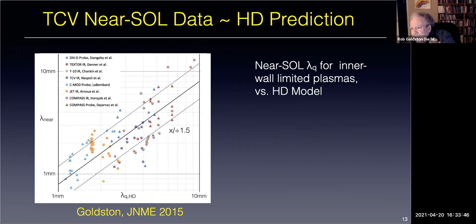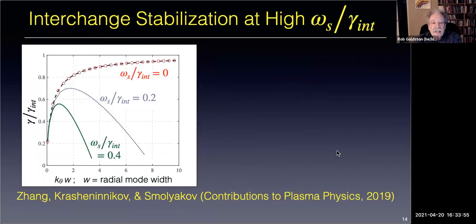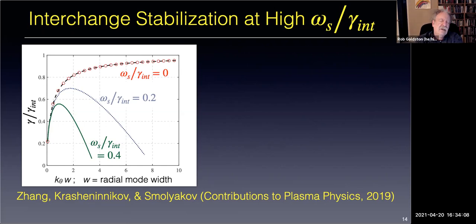I gave a talk at the ITPA where Krasheninnikov essentially trashed the hypothesis, saying it was incorrect. But I said, let's look at your paper. We went back and examined Zhang, Krasheninnikov, and Smalyakov. The interchange growth rate depends on K-theta times the radial mode width. If you have low enough K-theta, the growth rate drops off. They varied omega-S over gamma-int from zero to 0.2 to 0.4, but had no plot for the shearing rate exceeding 0.4.